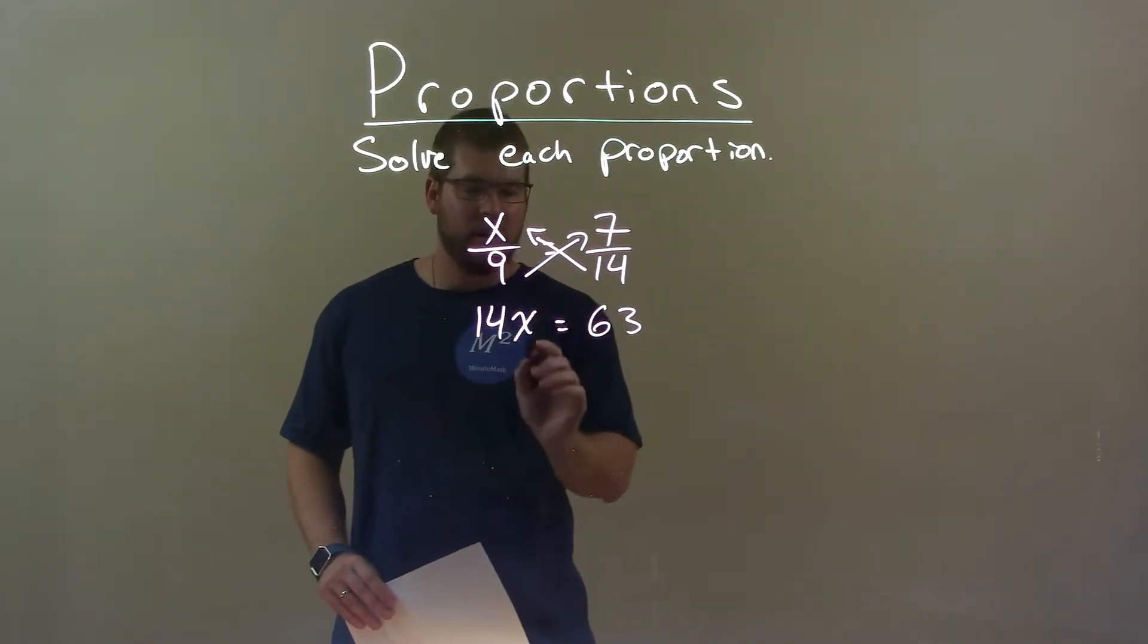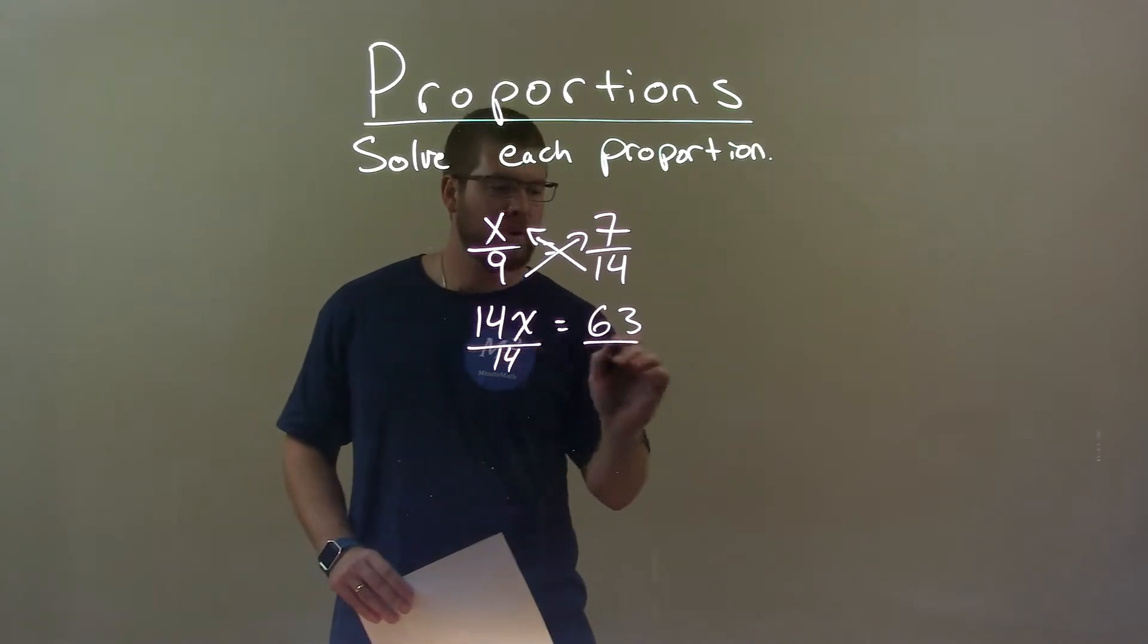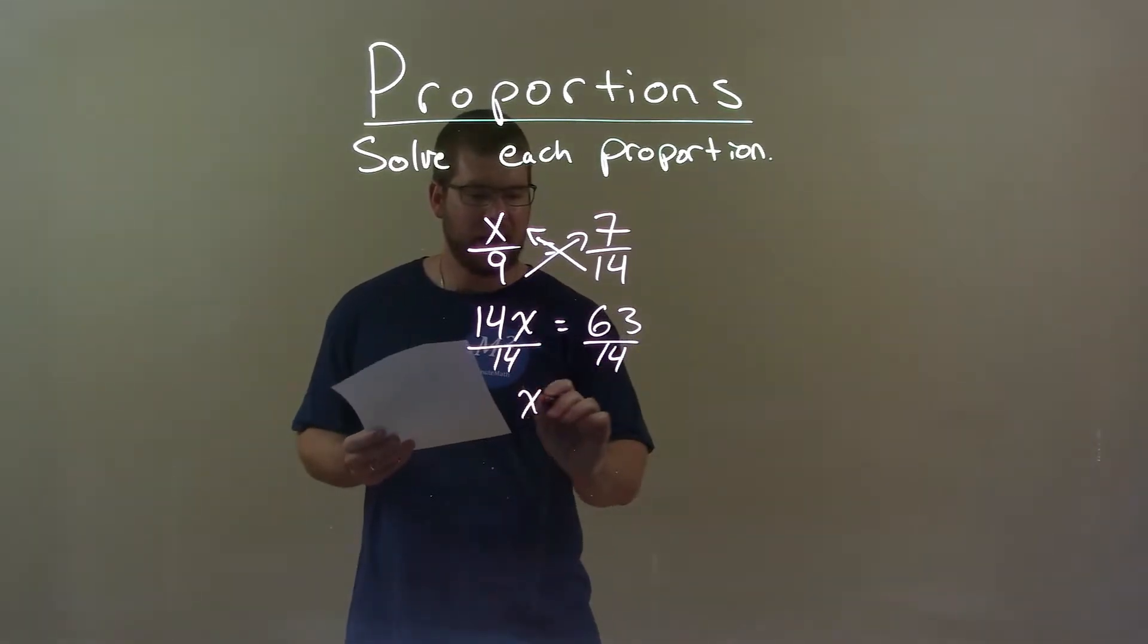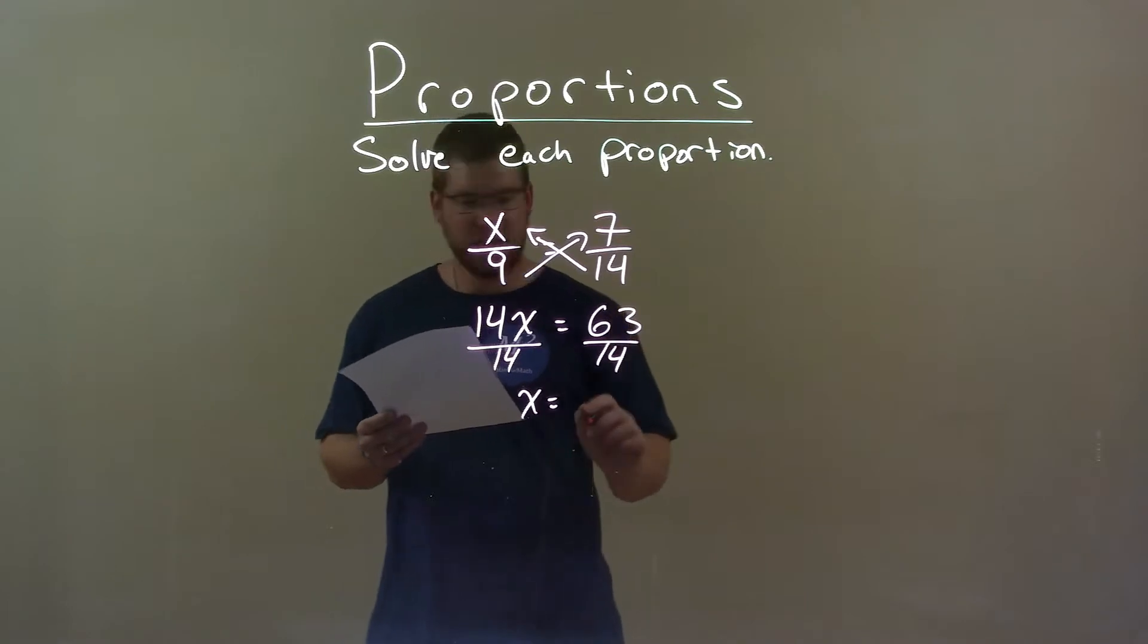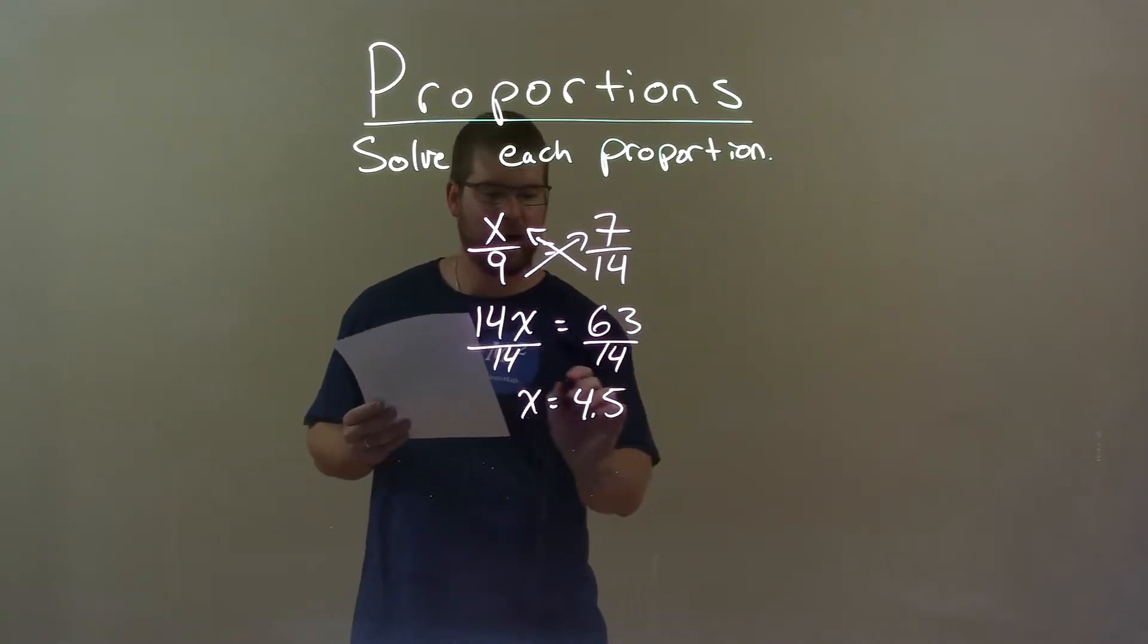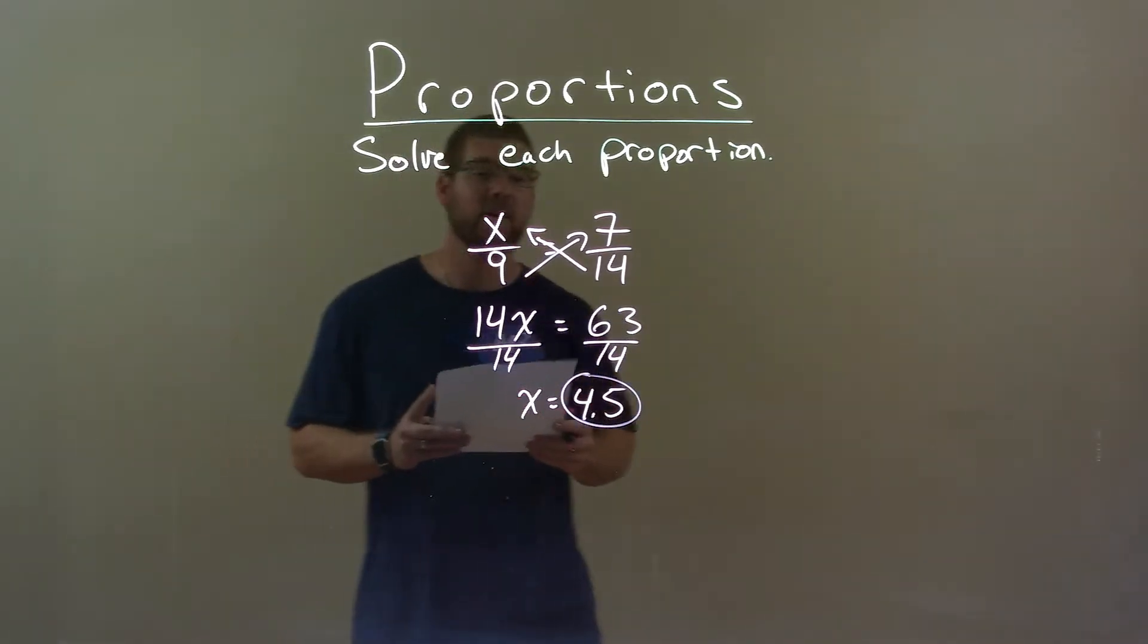I need to get x by itself. Divide both sides by 14, okay? And x equals 63 divided by 14 is 4.5. And that is our final answer.